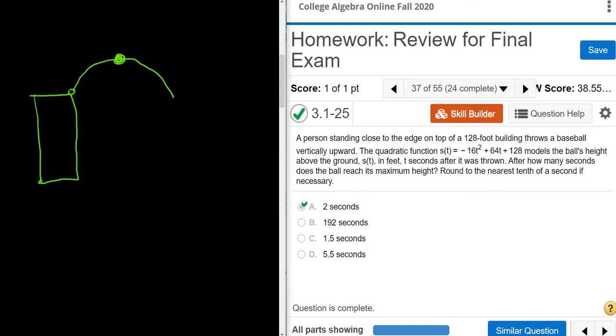The function that models the path of the ball is actually given in the problem. It's s of t, and that's equal to negative 16t squared plus 64t plus 128.